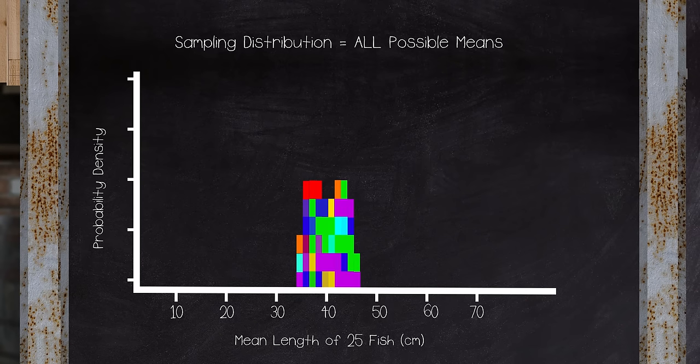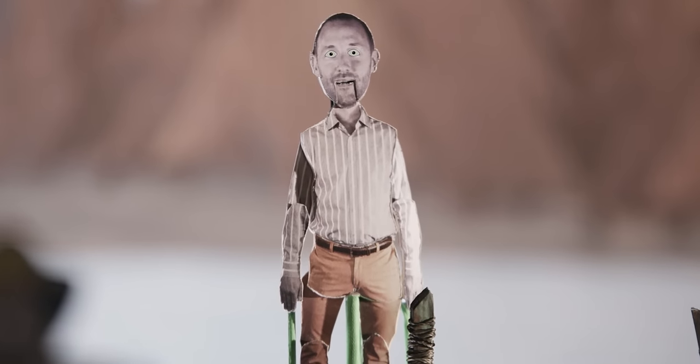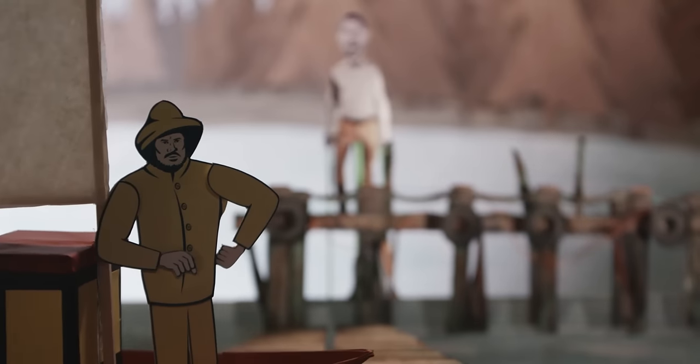Wouldn't it be great if we could see a histogram of all the possible sample means without having to collect sets of 25 fish over and over again forever? What would happen if we ended up with a different sample of 25 fish? You'll be pleased to hear that there is a way to know approximately what the shape of this distribution would look like, without repeating the sampling process thousands of times.